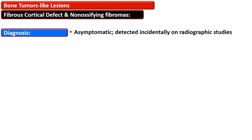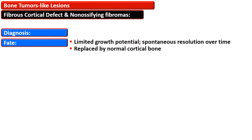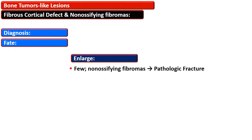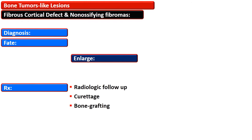Metaphyseal cortical defects are diagnosed incidentally on radiographic studies, as most patients remain asymptomatic. The lesion has limited growth potential and most lesions resolve over time, replaced by normal cortical bone. Some non-ossifying fibromas enlarge and result in pathologic fracture. The treatment of this lesion is radiologic follow-up initially, followed by curettage and bone grafting.